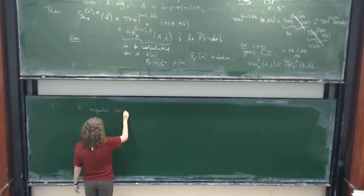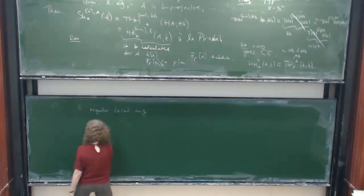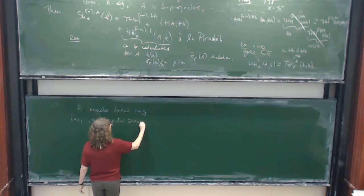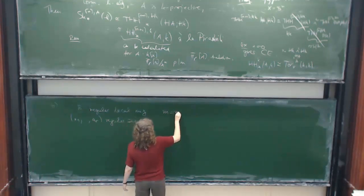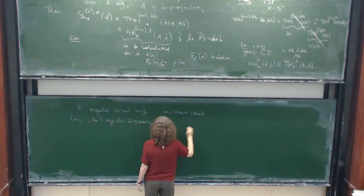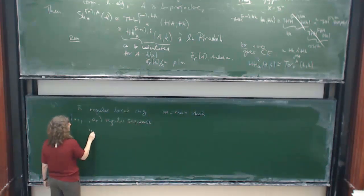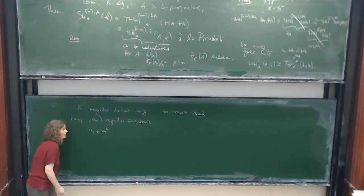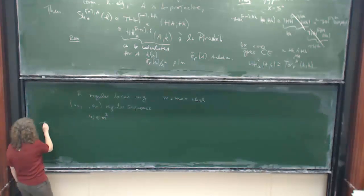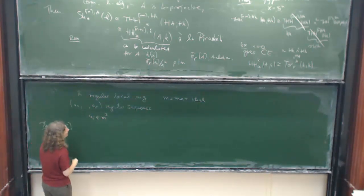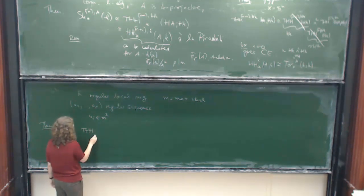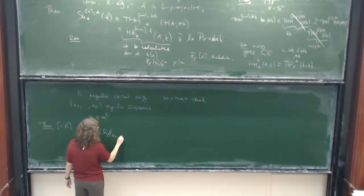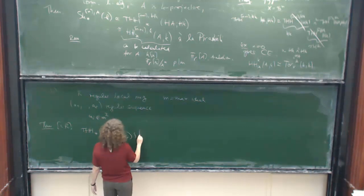So what is the setting? Take a regular local ring, take a1, ... aR, a regular sequence. Suppose if I call M the maximal ideal, then I want that the ai are in M squared, and then I claim the following.